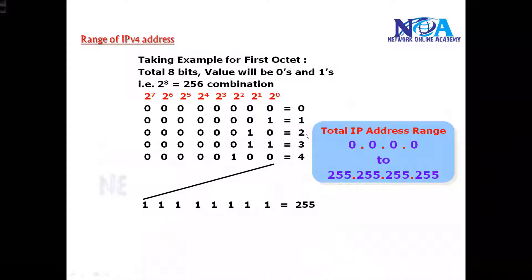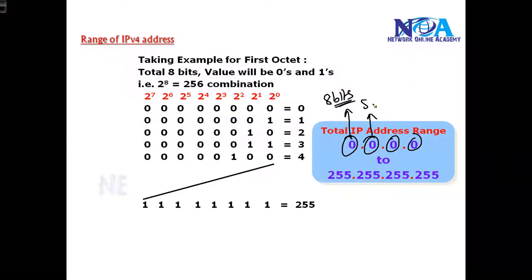The next thing we need to know is the range of IP addresses. The IP address has four portions and each portion has eight bits, so there will be a group of eight bits in each portion. The total IP address is a 32-bit address.